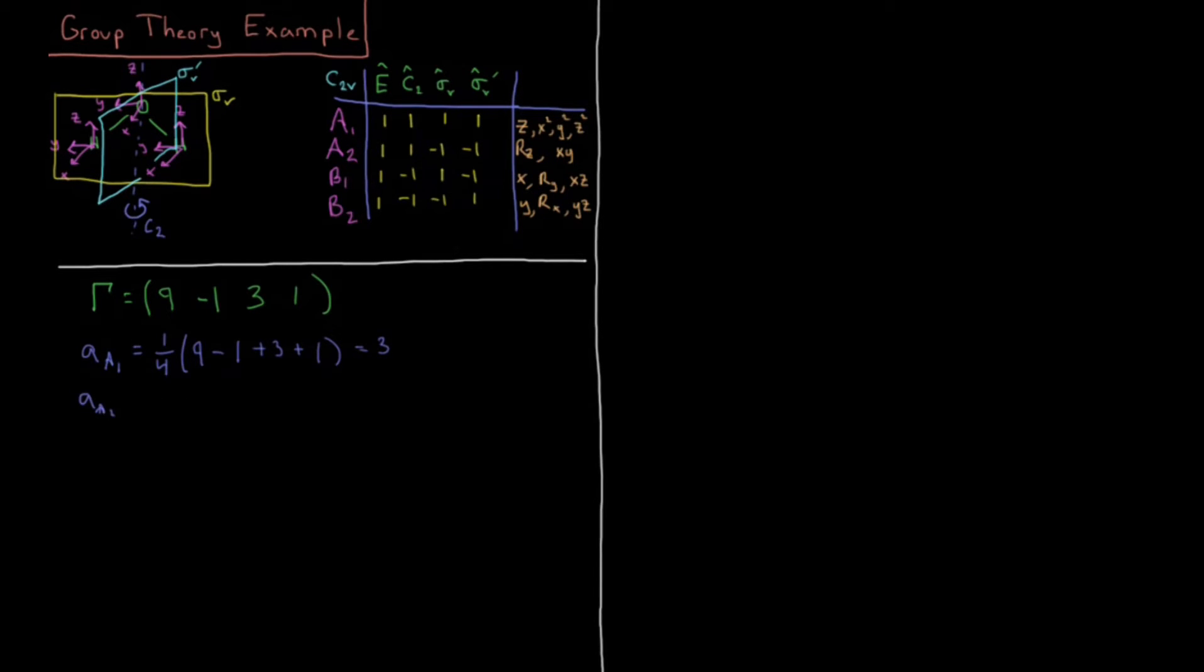A2 is going to equal 1 fourth times 9 times 1, minus 1 times 1, plus 1, minus 1 times 3 is minus 3, minus 1 times 1 is minus 1. 9, 8, 5, 4, divided by 4 is 1.